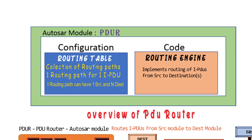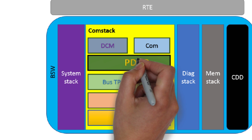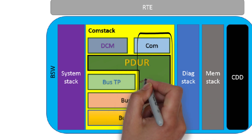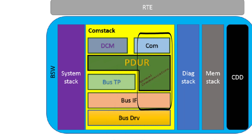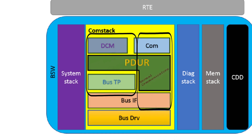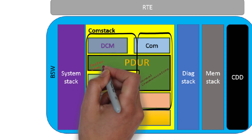Usually, PDUR is practically used to connect CANIF or FlexRay to the COM module for normal communication, and the TP module to the DCM module for diagnostic communication.